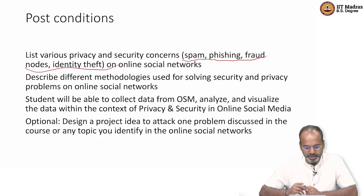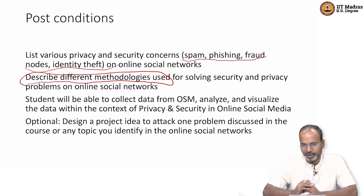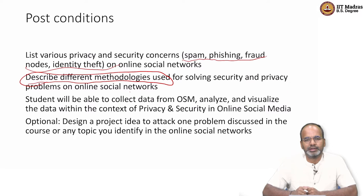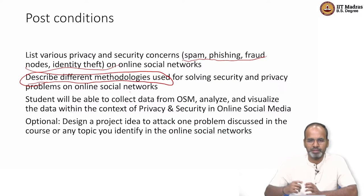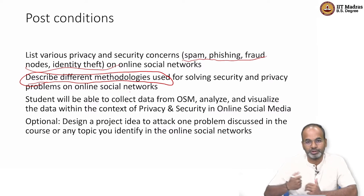The second post condition is: describe different methodologies used for solving security and privacy problems on online social networks. The first is about listing various ideas; the second is about describing methods to solve the problem. If you remember the content, we have addressed many methodologies which can help address the spam problem, phishing problem, fraud nodes problem, identity theft, and identity resolution — many methods we saw as part of this course.